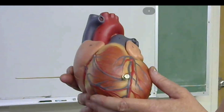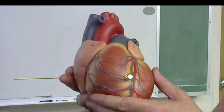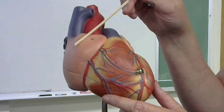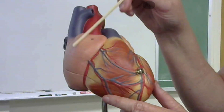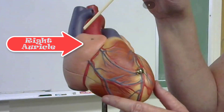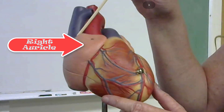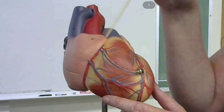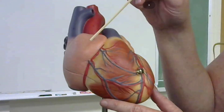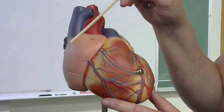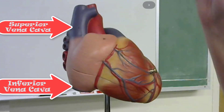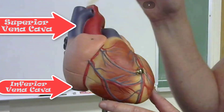Here we have our medium-sized heart model. We have a protective covering that lies over the area of the right atrium — this is the right auricle. Underneath, we have the right atrium, which is going to receive deoxygenated blood from the superior and inferior vena cava.